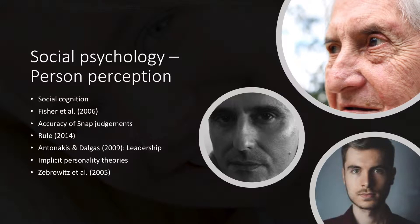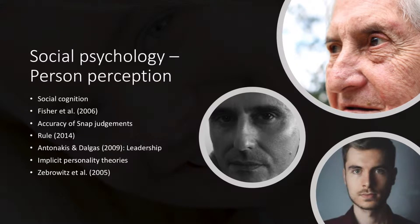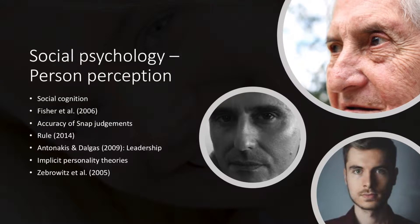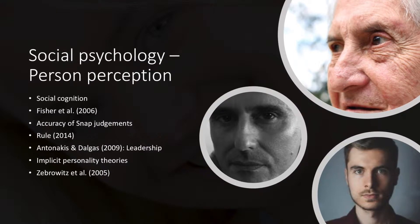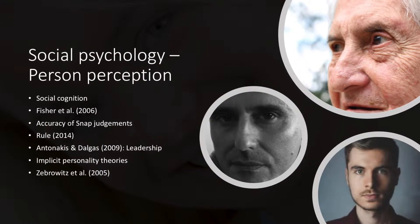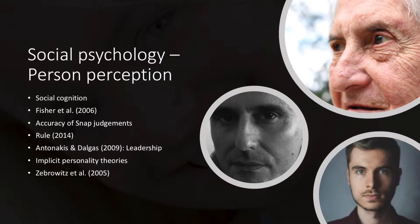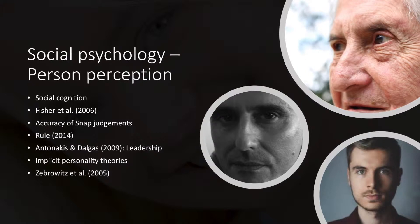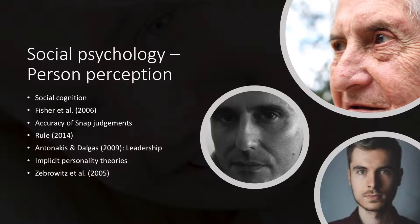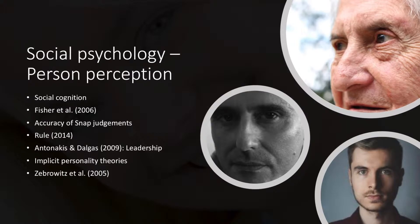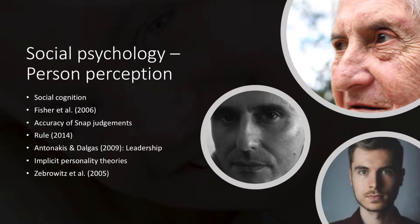Why do we need to study person perception? We might want to know things like the accuracy of snap judgments, in which individuals judge extroversion from photos shown at only 50 milliseconds, and apparently there is a greater than 0.6 correlation in that. Rule 2014 stated that sexuality judgments could be deduced accurately after seeing 40 ms photos, and that thinking about it individuals become less accurate.